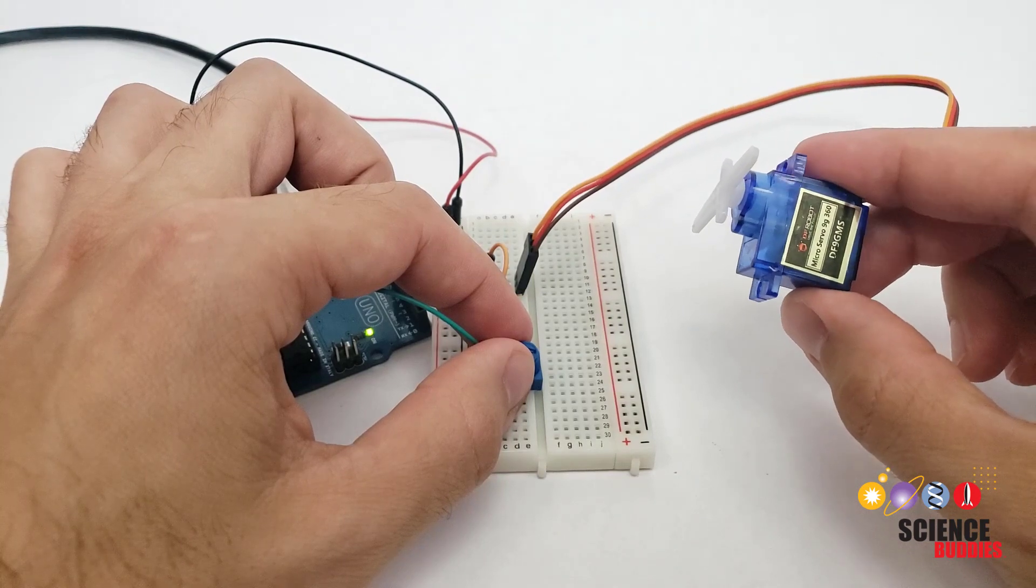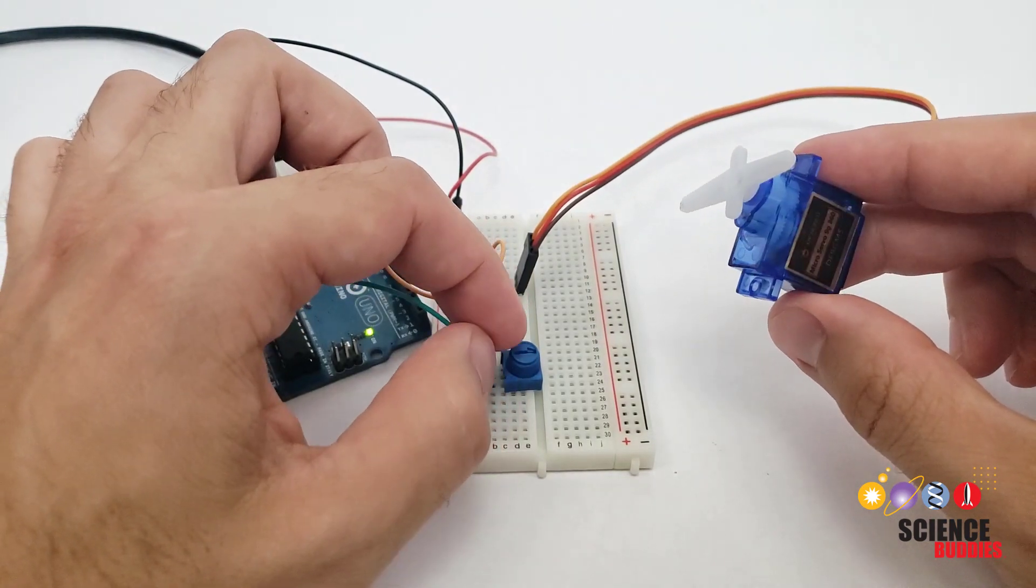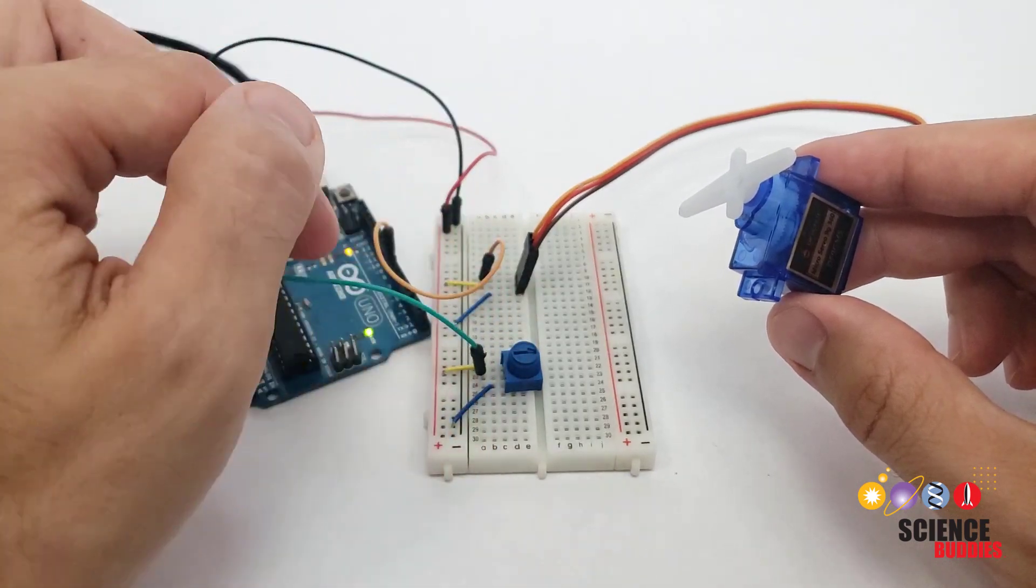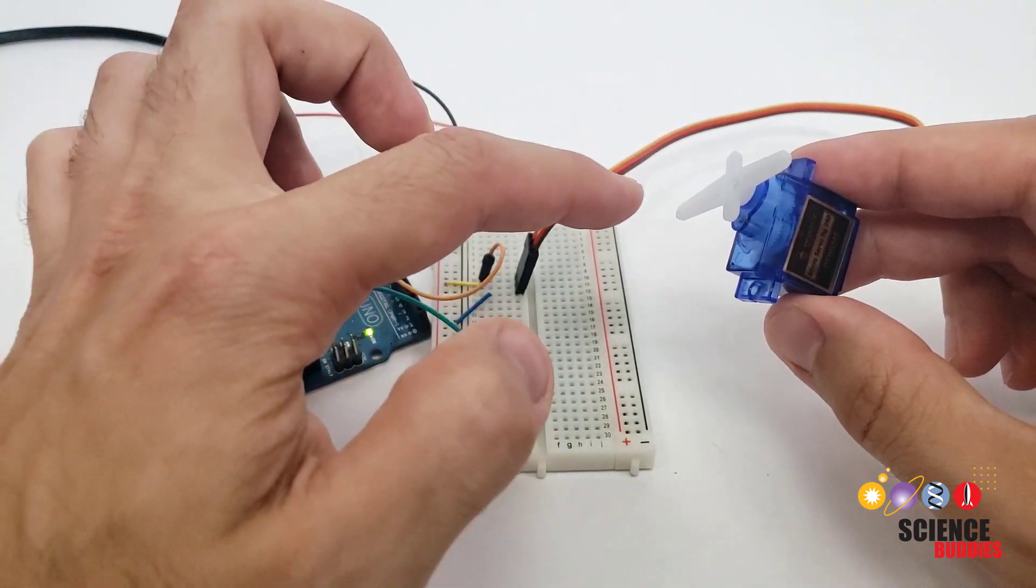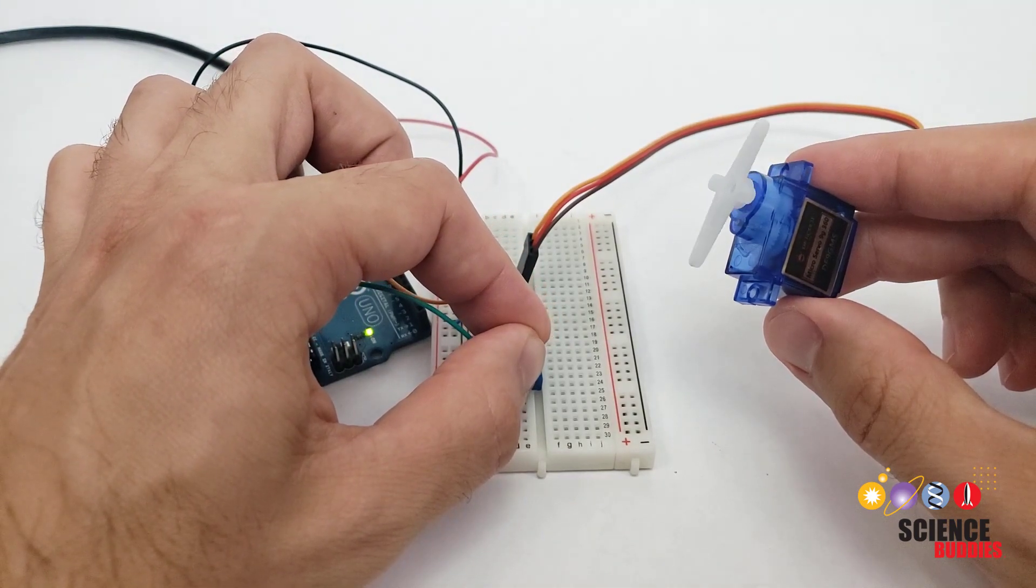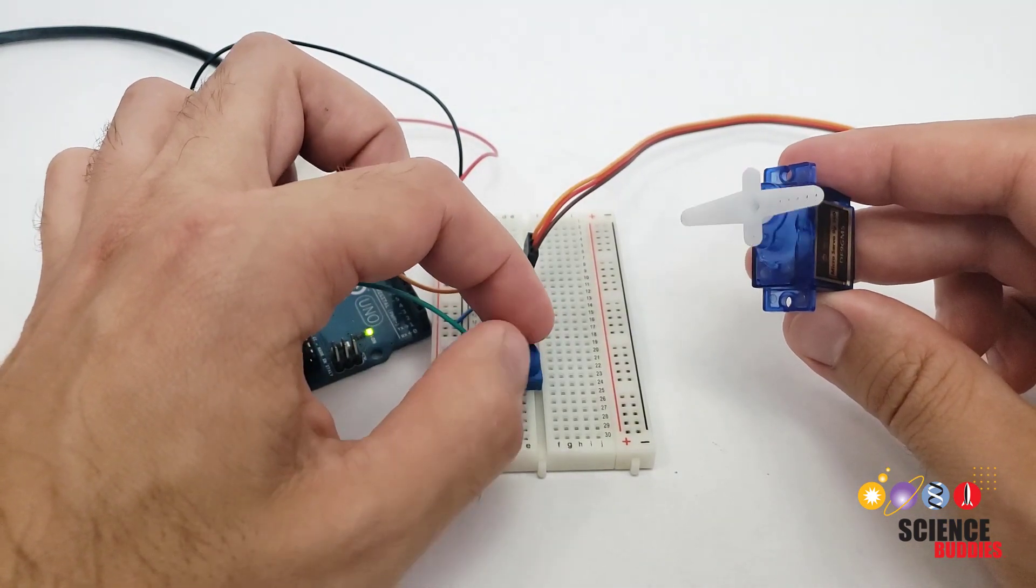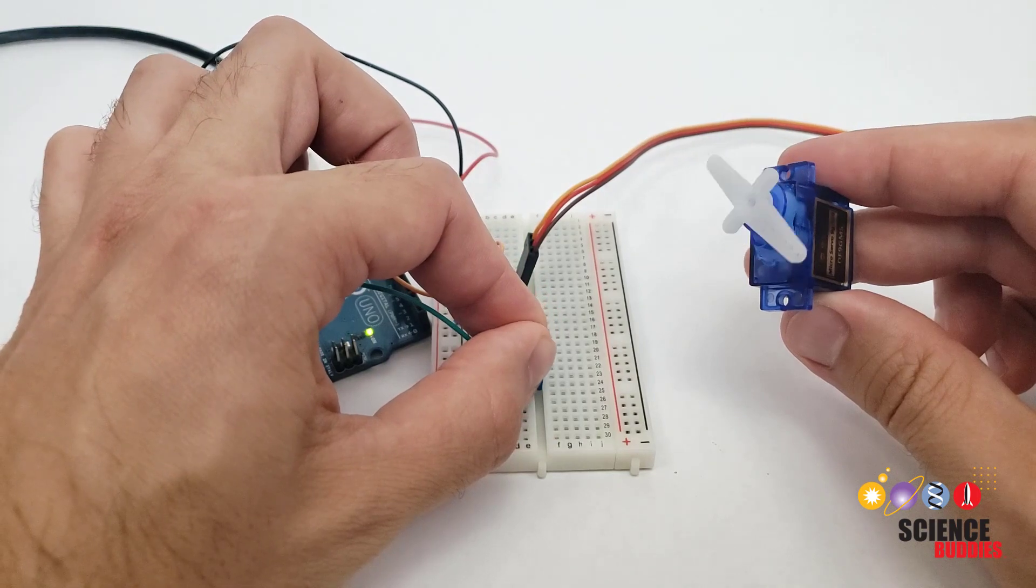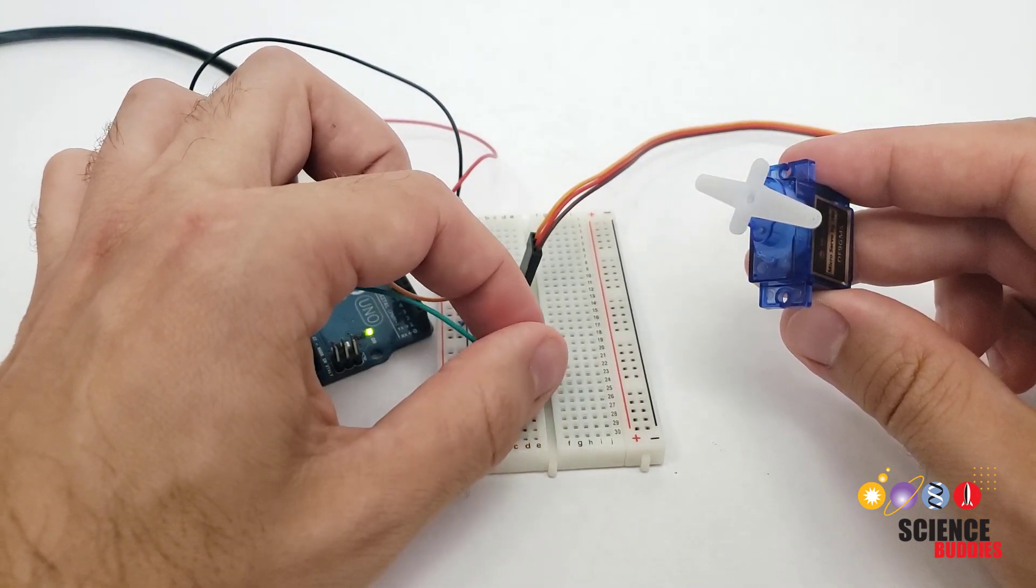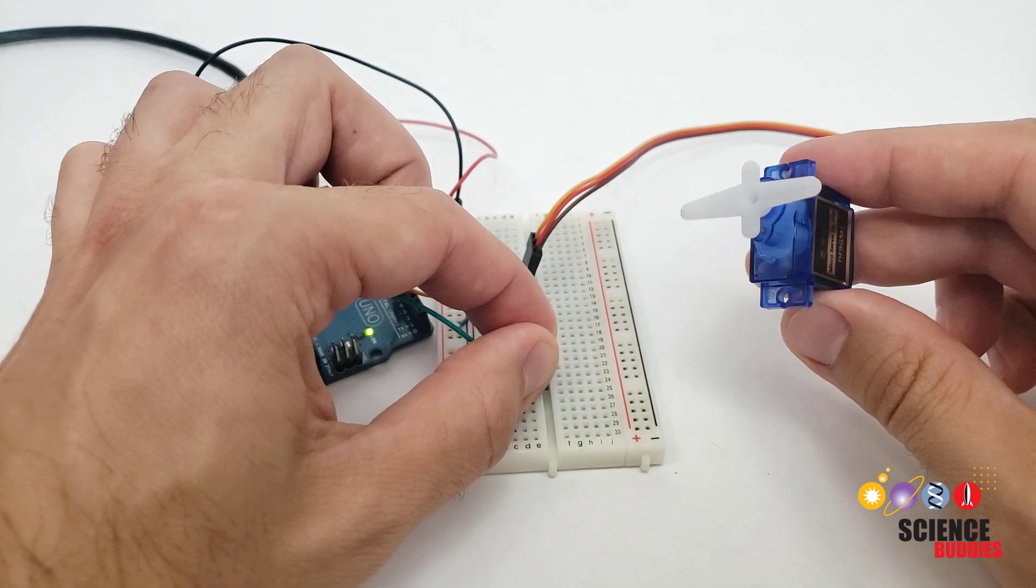If I swap in the continuous rotation servo motor, we see that it is stopped when the potentiometer is in the center of its range. Again, the code is calculating a value of about 90 to send to the servo. If I rotate the potentiometer counterclockwise, then the motor will spin counterclockwise. The farther I rotate it, the faster the motor will spin. If I rotate the potentiometer clockwise, then the motor will spin in the other direction.